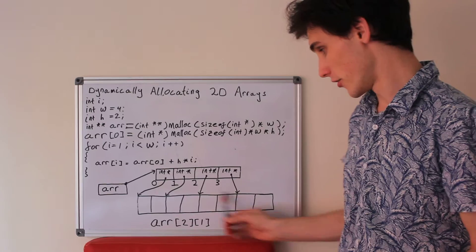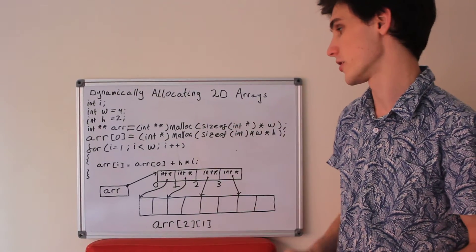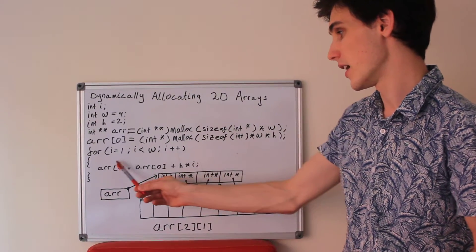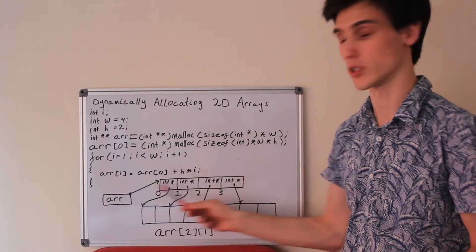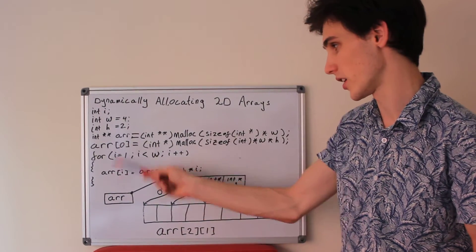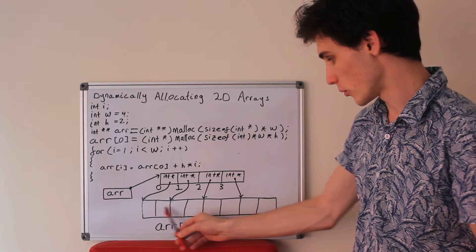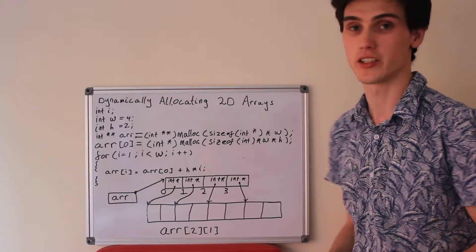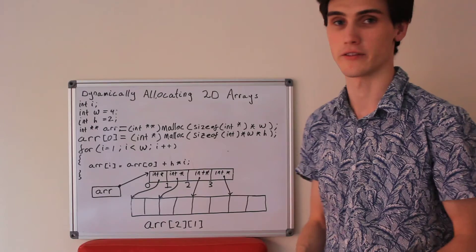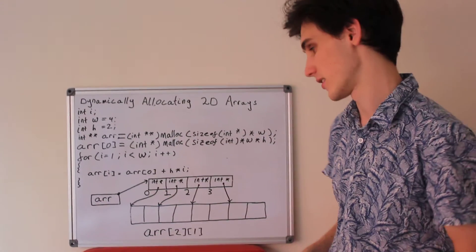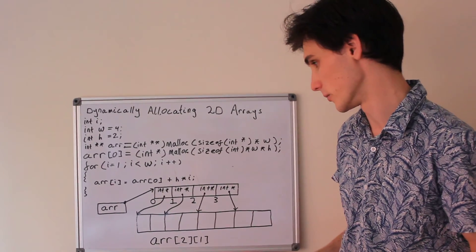The reason I think this way of dynamically allocating a two-dimensional array is better than, say, malloc-ing a new column each time through the for loop, is because you end up with a nice contiguous block of memory. This is much better if you do a lot of accesses, as it keeps it very local for the CPU.